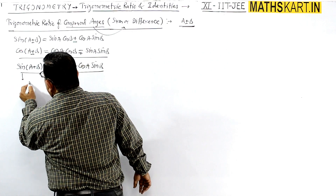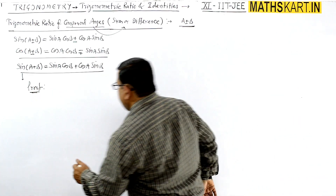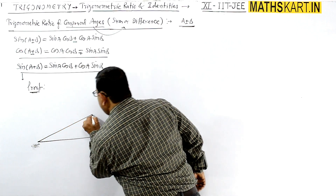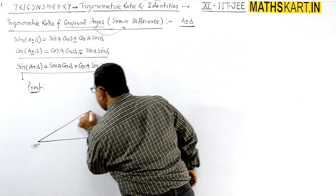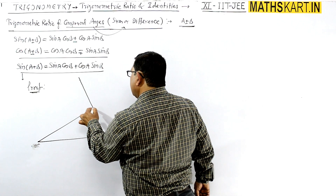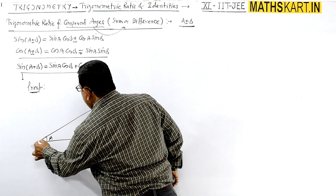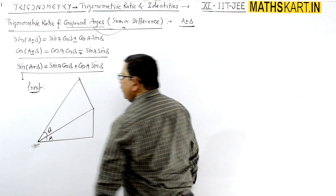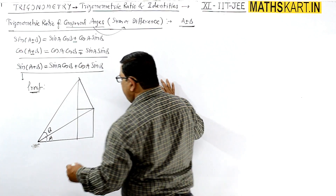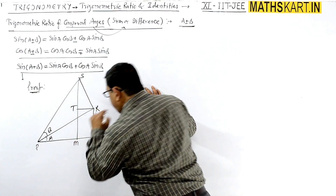We will take this particular formula and prove it. There is a short trick method to prove this. You have to take one angle A here. Let's say this is angle A. Make the big angle here — this is angle A — and on this angle you draw a right angle. Then join this. We have created angle A, and then we create angle B. Let's say this is angle B. So we have to use sin(A+B). Drop a perpendicular here. Let's say the points are P, Q, R, S, T, and M.